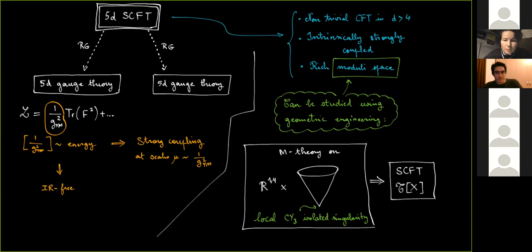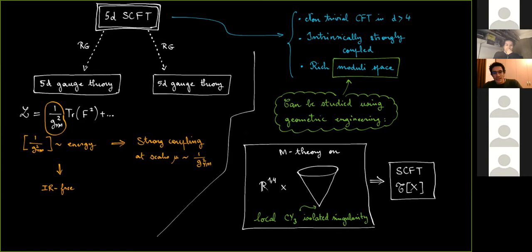It could be thought that these theories are trivial, but as we have known for more than 20 years now, UV fixed points exist — these are the 5D SCFTs I will be interested in today. Importantly, distinct gauge theories can have the same UV completion, so a given SCFT can have different gauge theory interpretations depending on its phase. These theories also have a very rich moduli space, the main character of the talk, which can be studied using geometry, in particular in the framework of string theory or M-theory.